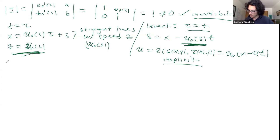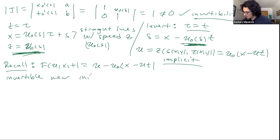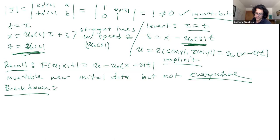So now we know that if we recall from before, f(u,x,t) equals u minus u_0(x - ut) is invertible near initial data, but not everywhere. We remember that from before, and in particular, there's going to be some breakdown points at which I can't invert this implicit solution anymore.